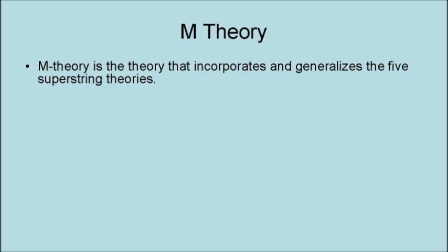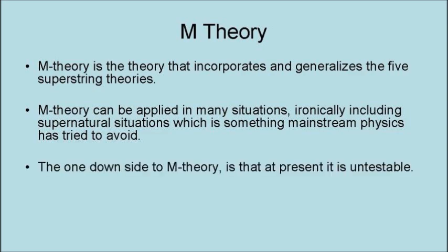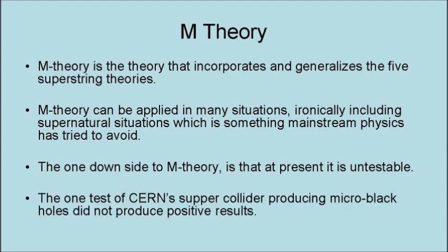M-theory is the theory that incorporates and generalizes the five super-string theories. M-theory can be applied to many situations, ironically including supernatural situations, which is something mainstream physics has tried to avoid. The one downside to M-theory is that, at present, it is untestable. The one test of CERN's supercollider producing micro-black holes did not produce positive results.